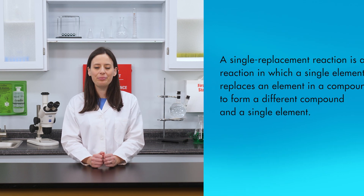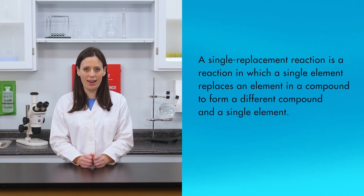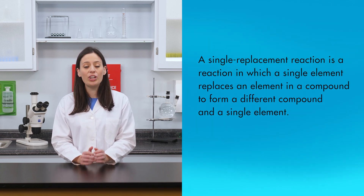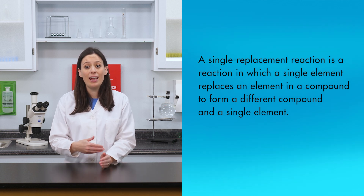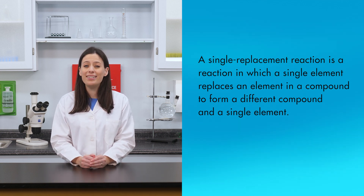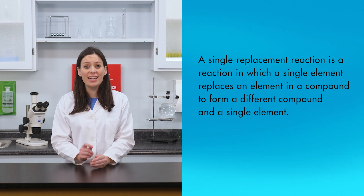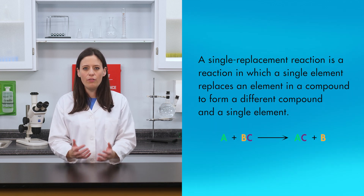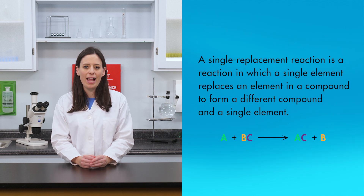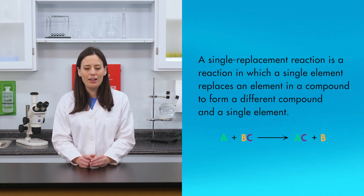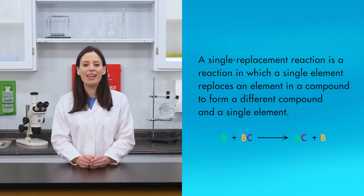The first type of chemical reaction we will explore is called a single replacement reaction, which is sometimes called a substitution reaction. A single replacement reaction is a reaction in which a single element replaces an element in a compound to form a different compound and a single element. The general form for a single replacement reaction is A + BC → AC + B.